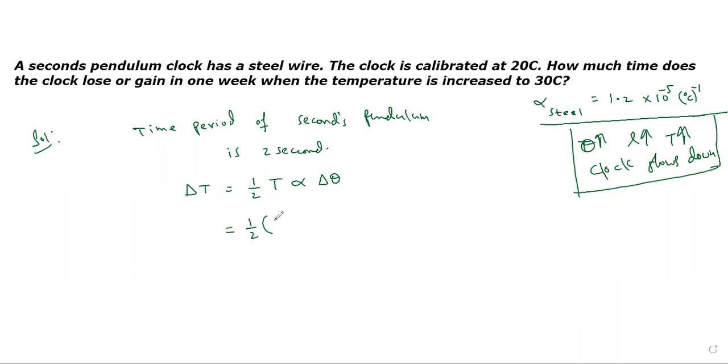One half into the original time period times alpha, given as 1.2 times 10 to the power minus 5, times delta theta. Change in temperature from 20 to 30, 30 minus 20. Two gets cancelled. What is 1.2 times 10 power minus 5 times 10? 12 by 10.